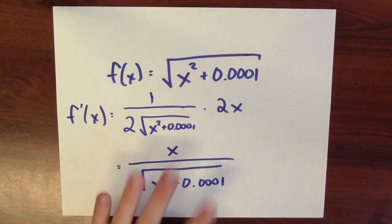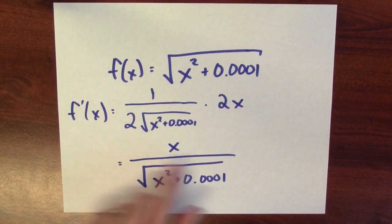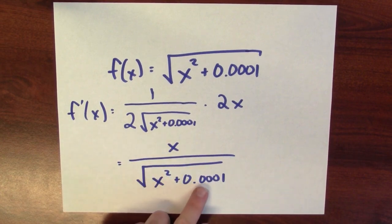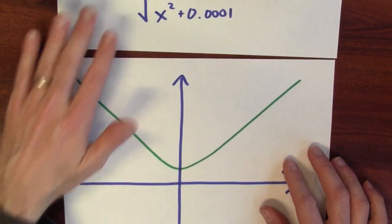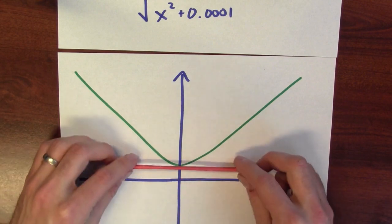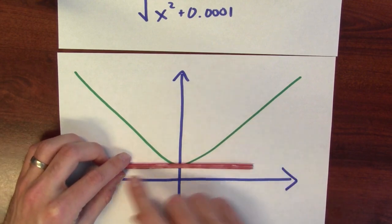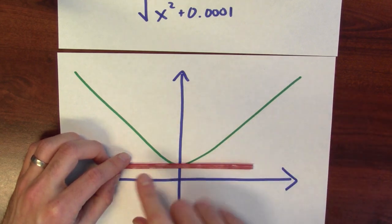What happens at 0? So I'm going to compute the derivative at 0. Well, if I plug in 0 for x, I've got 0 over 0 squared plus .0001. The denominator is not 0. The numerator is 0. The derivative at 0 is 0. And you can see that from the graph. If I look at when x equals 0, the tangent line at that point is horizontal. The slope of that tangent line is 0. The derivative at 0 is 0.